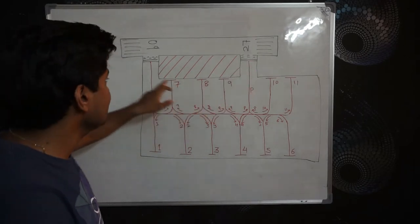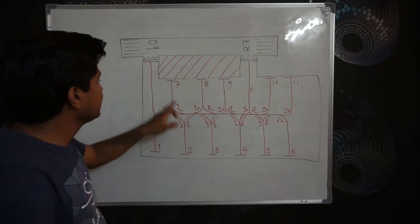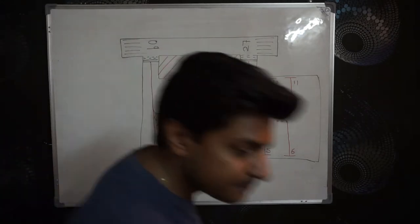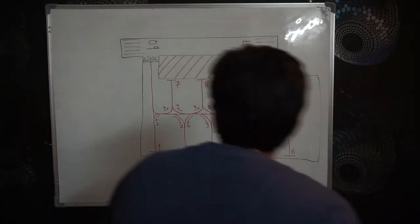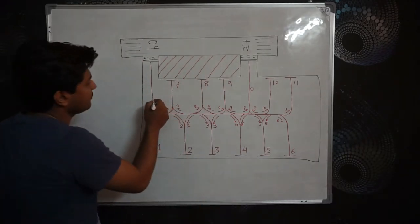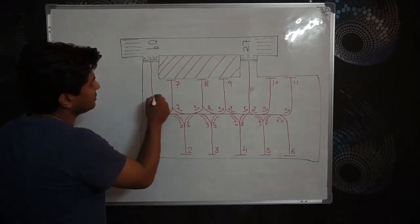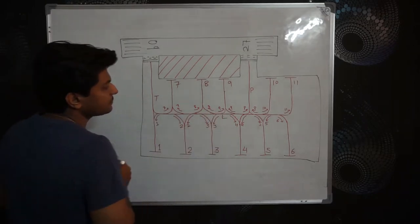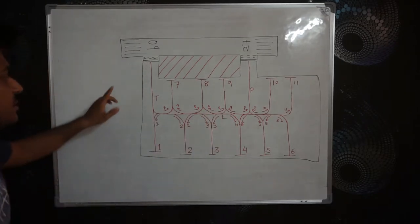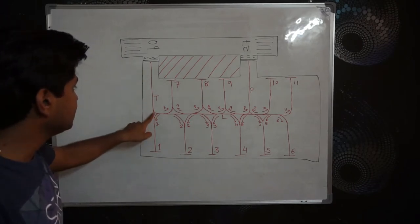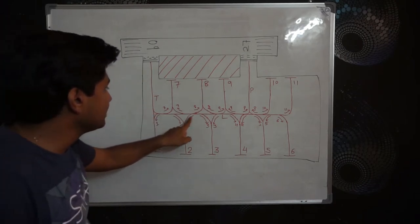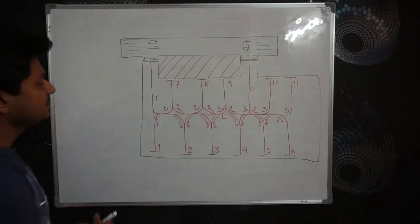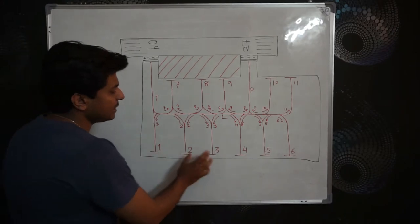This line is the taxiway guideline, and these are taxiways. You can find the taxiway names here — suppose this one is Tango, and this is Lima. So up to here it is taxiway Tango, then it becomes Lima, and this one is Papa. And these are all bays.